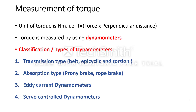Next is the absorption type dynamometer. Absorption means it absorbs the power. That's why the name is absorption type dynamometer.